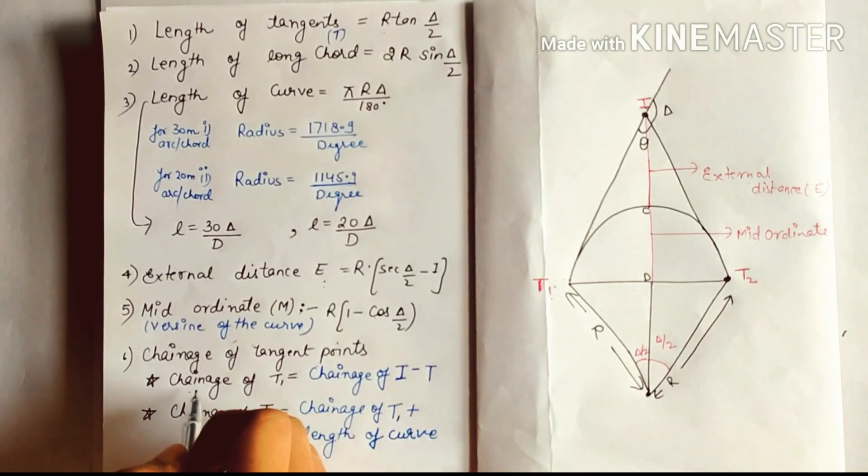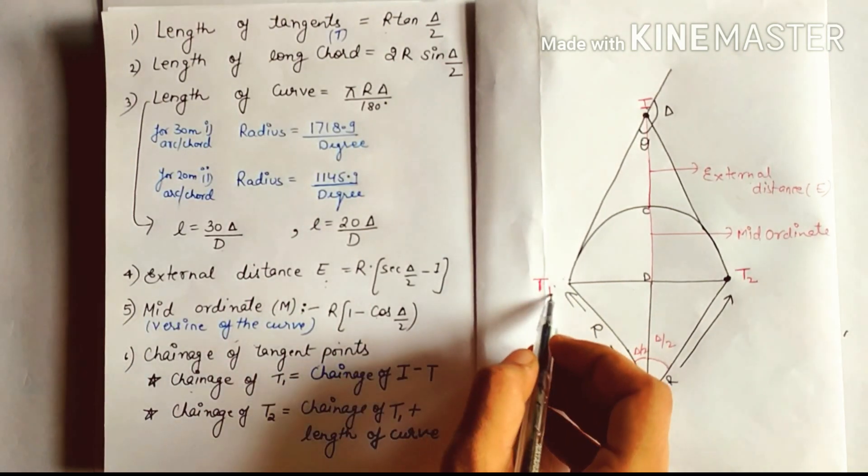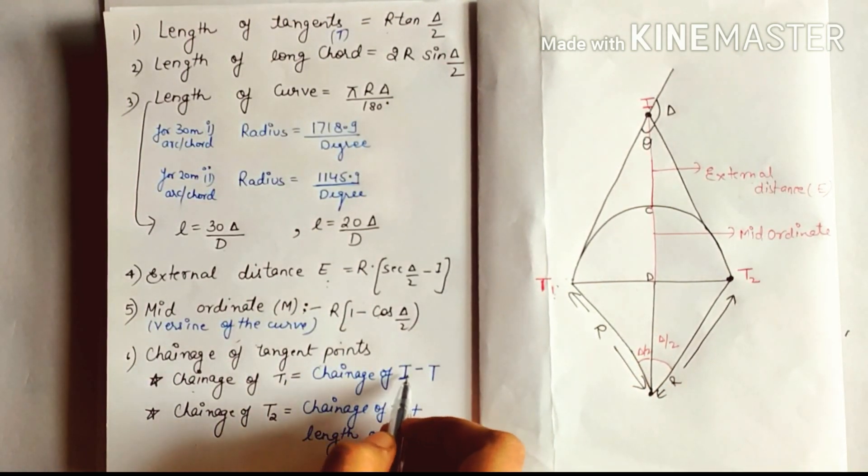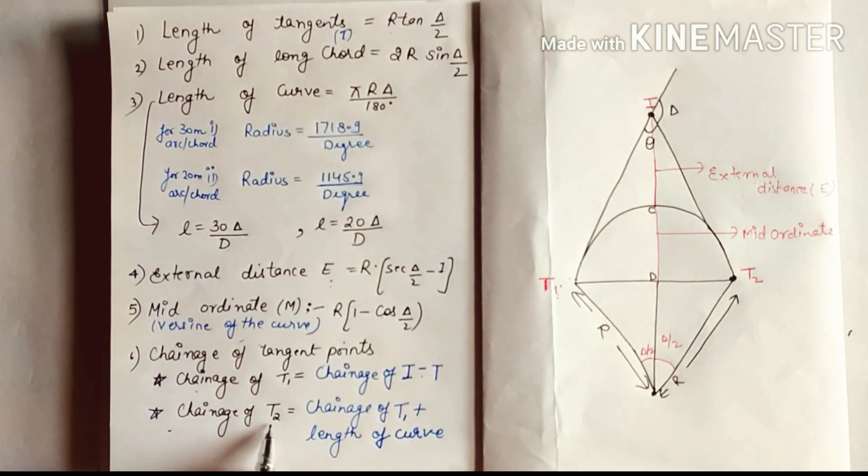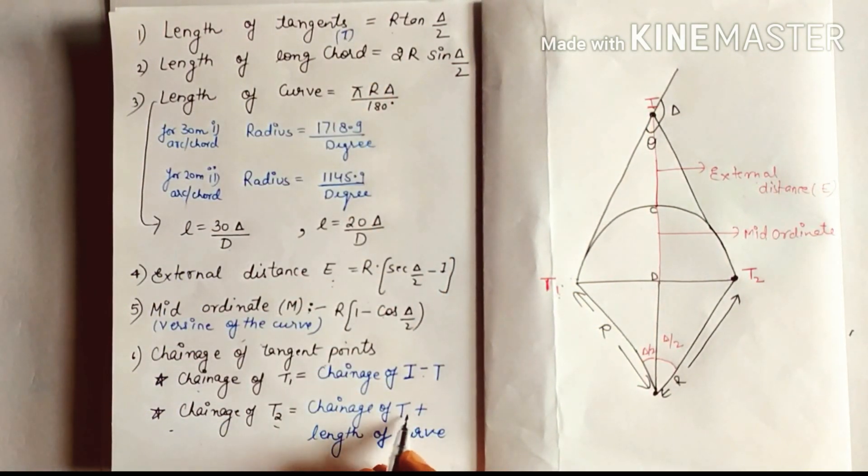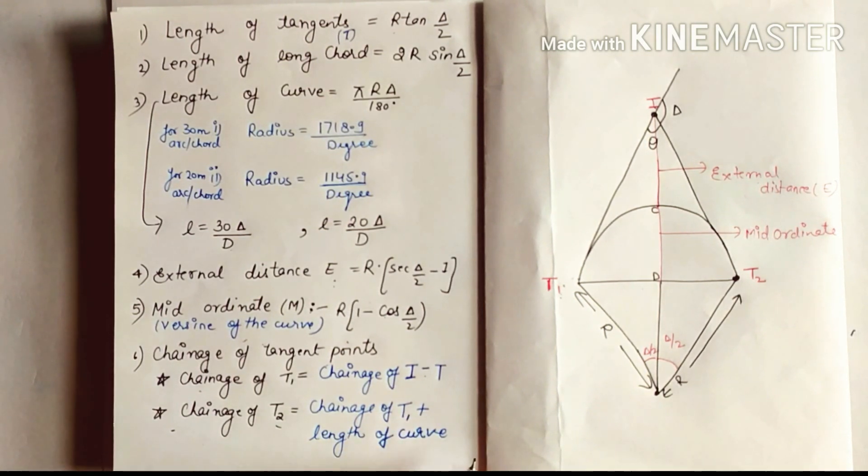Chainage of tangent point, chainage of T1 = chainage of I minus T, where T is length of tangent. Chainage of T2 = chainage of T1 plus length of curve.